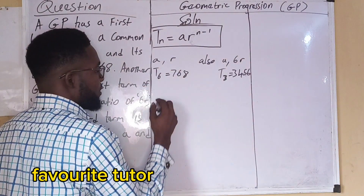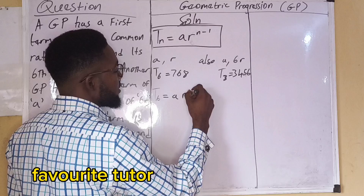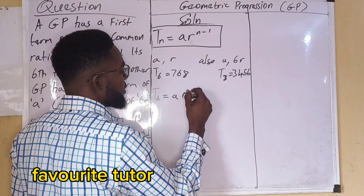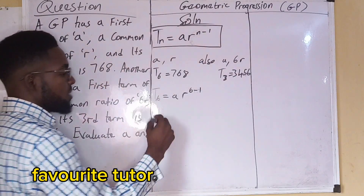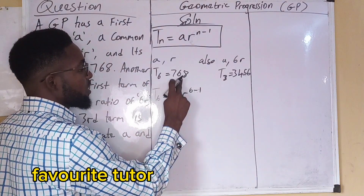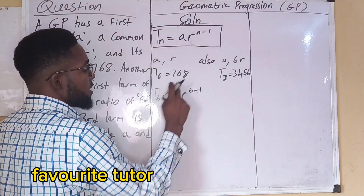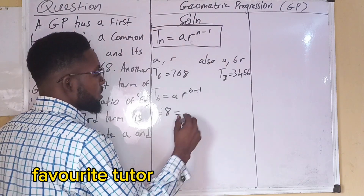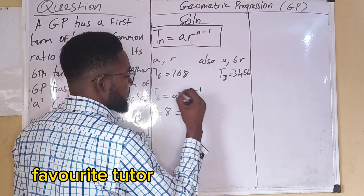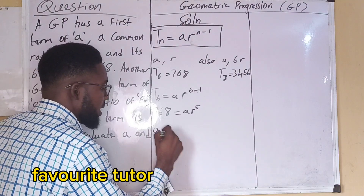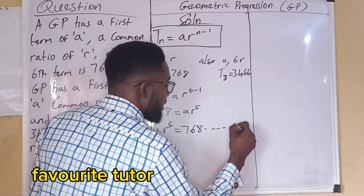For the sixth term, using the formula A·R^(N−1), it is A·R^(6−1), which is A·R^5. The sixth term is 768, so therefore A·R^5 = 768. Let's call this Equation 1.